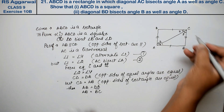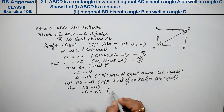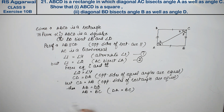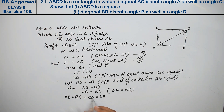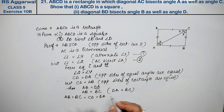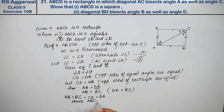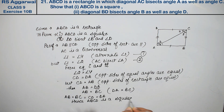देखें, DA तो BC के equal था, because DA is equal to BC. तो हम क्या कह सकते हैं — AB equal हो गया BC के, BC equal हो गया CD के और DA के. AB की जगह CD रख दिया और BC की जगह DA — यह सब equal हो गया. Hence, ABCD is a square. यह प्रूव्ड हो गया — सारी sides equal हो गई.